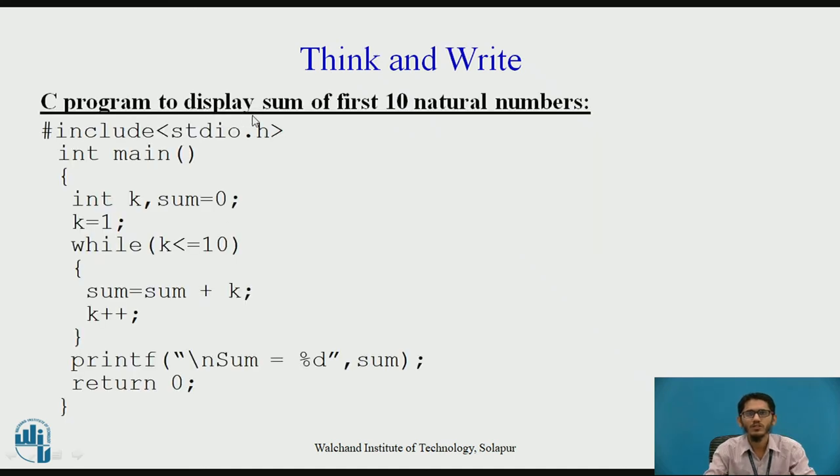The C program to display the sum of first 10 natural numbers. We have the code as: first of all, inside the main function, the variables k and sum being used, sum initialized to 0, k initialized to 1, and while k is less than or equal to 10, we have sum equal to sum plus k. Meaning when k value is 1, the value of 1 is added to sum, then k is incremented, and then k value is checked whether it is less than or equal to 10. If it is so, it is added to sum, and in this way all the numbers are added. At the end, we have sum equal to percentage d, meaning the value of sum is displayed as it has been calculated.